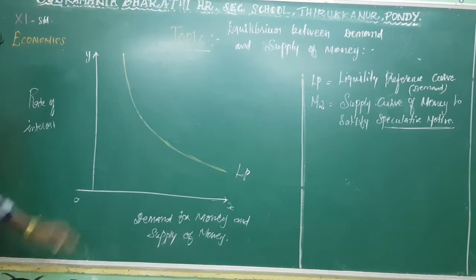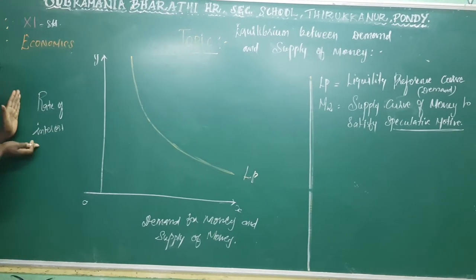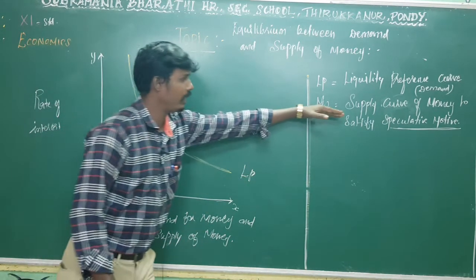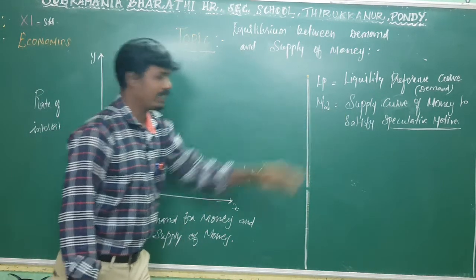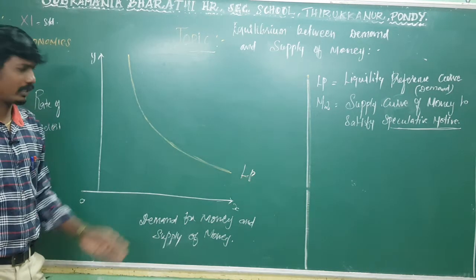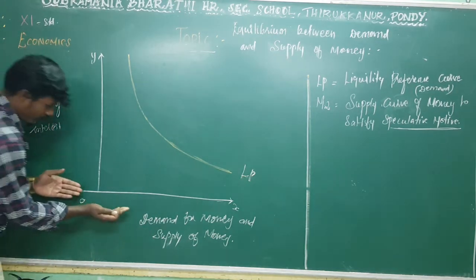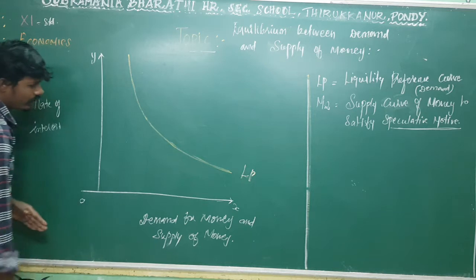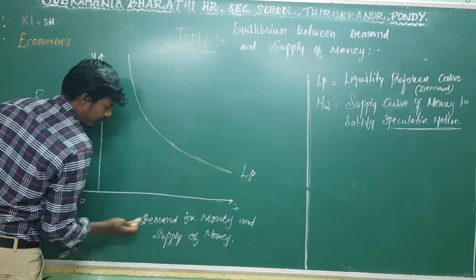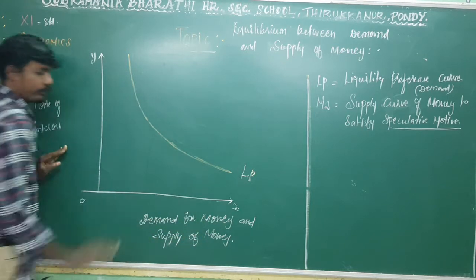Where you can see the rate of interest — that means the supply of money — which is a speculative motive, that means the rate of interest. The Y-axis represents the demand for money and the supply of money.